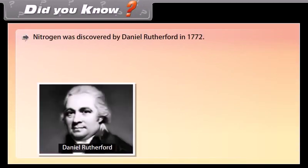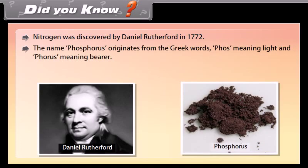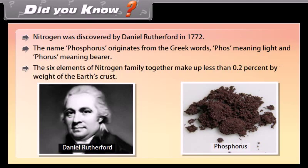Did you know? Nitrogen was discovered by Daniel Rutherford in 1772. The name phosphorus originates from the Greek words 'phos' meaning light and 'phorus' meaning bearer. The six elements of the nitrogen family together make up less than 0.2% by weight of the earth's crust.